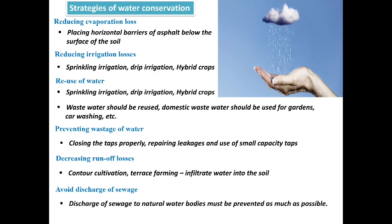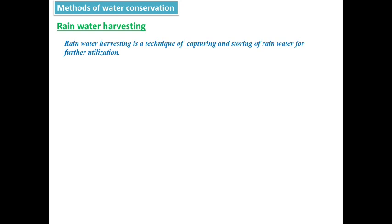The fifth strategy is decreasing runoff losses. The runoff of most soils can be reduced by allowing more water to infiltrate into the soil. This can be achieved by contour cultivation and terrace farming, so that more water infiltrates into the soil and enriches the nutrients present in it. The sixth strategy is prevention of sewage discharge. The discharge of sewage into natural water bodies must be prevented as much as possible to avoid water pollution.